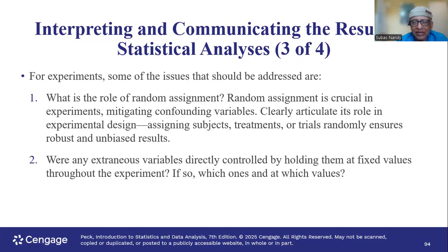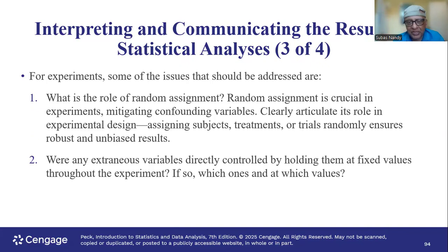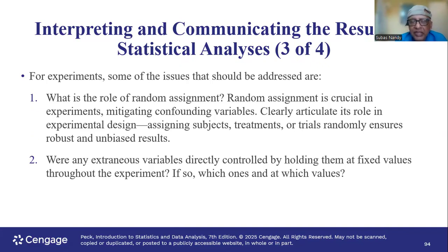Were any extraneous variables directly controlled by holding them at fixed values throughout the experiment? If so, which ones and at which values? Extraneous variables — like time of the day — can affect and confound the results, so they should be removed or held constant. In the experiment testing the effect of room temperature on student test performance, the time of day in both rooms should be the same. The confounding variable, time of day, should be kept the same across both groups to remove its effect on exam performance.